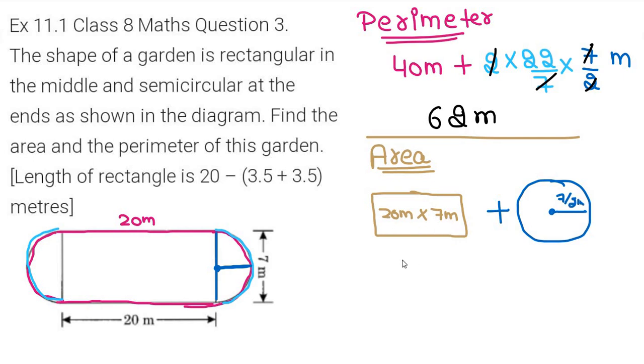So the rectangle area is 140 square meters. And the area of circle is πr². Pi is 22/7 and the radius is 7/2 meters multiplied by 7/2 meters.